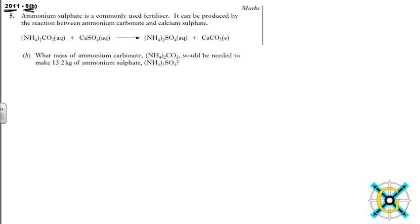Ammonium sulphate is a commonly used fertilizer. It is produced by the reaction between ammonium carbonate and calcium sulphate. The reaction is shown there and the question B asks what mass of ammonium carbonate, which is this formula, so if we can see that there, would be needed to make 13.2 kg of ammonium sulphate. There.